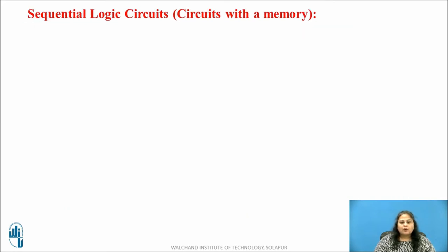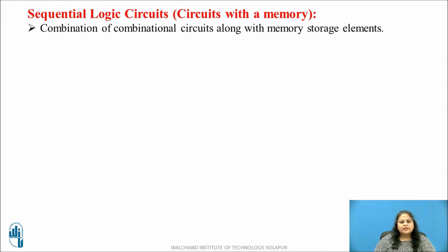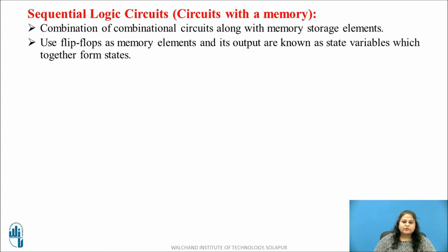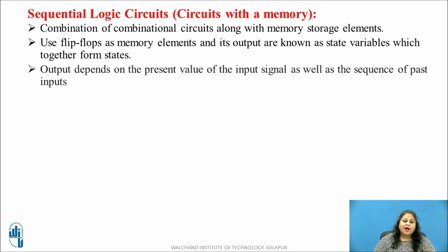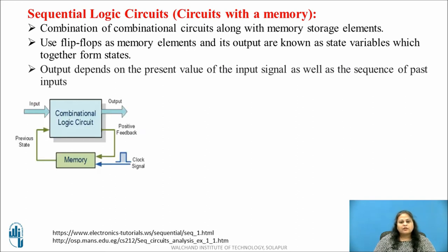Let us now see what a sequential circuit is. Sequential circuits are a combination of combinational circuits along with memory storage elements. They use flip-flops as memory elements, and their outputs are known as state variables which together form the states. In these circuits, the output depends on the present values of the input signal as well as the sequence of past inputs. The block diagram of sequential circuits consists of combinational circuit logic along with a block of memory elements.